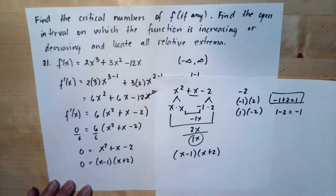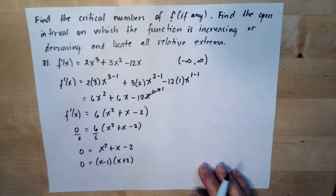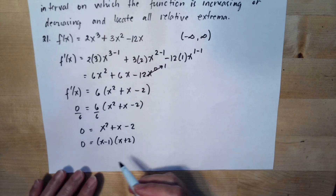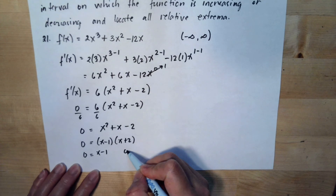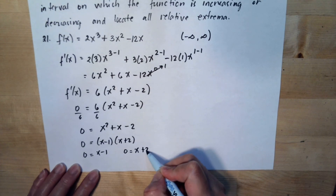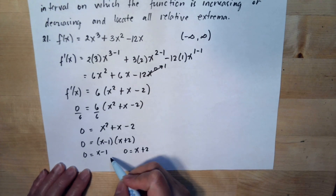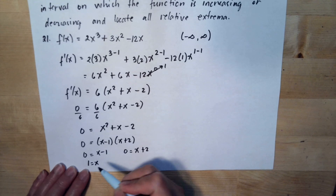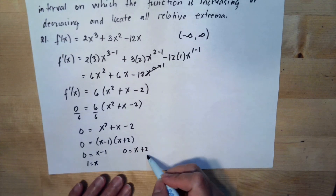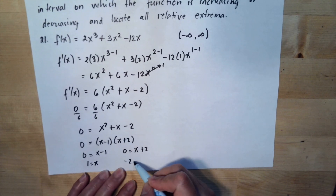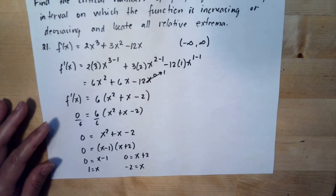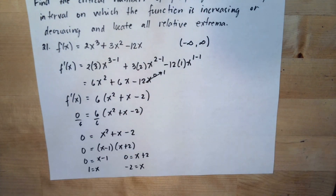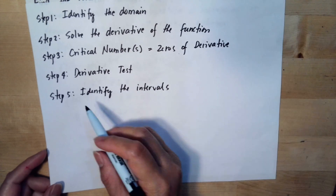Setting each factor equal to zero: x minus 1 equals 0 gives x equals 1, and x plus 2 equals 0 gives x equals negative 2. These are our critical numbers.